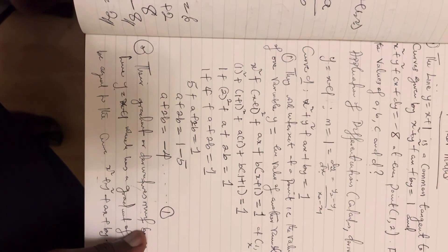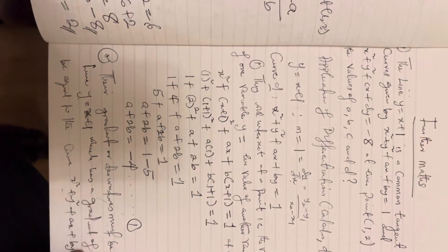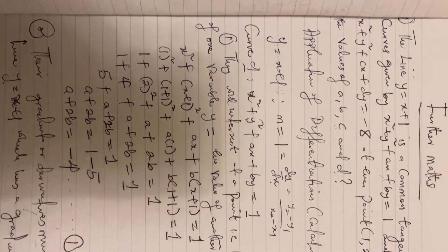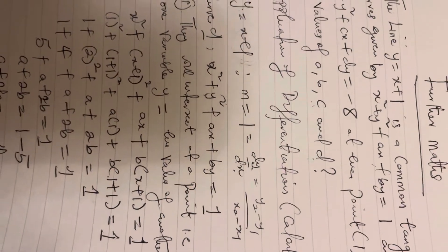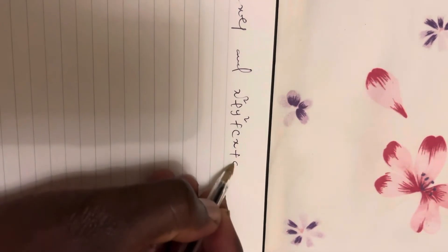So we are going to solve for c and d. We recall the equation: x² + y² — and we solve it on a new sheet. The line we have is y = x + 1, and the curve is x² + y² + cx + dy = -8.